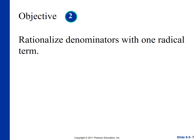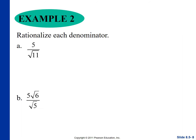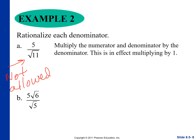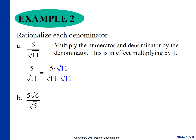Now we want to rationalize denominators with one radical term. Under the rules of algebra, you can never have a radical in the denominator. To get rid of it, you multiply by one — and one is whatever's in the denominator over itself. Since √11 is in the denominator, we multiply by √11/√11. That gives us 5√11 over 11, since √11 times √11 = 11.